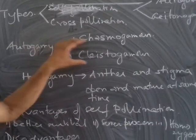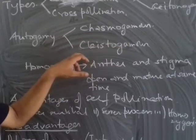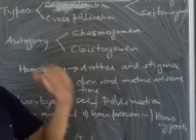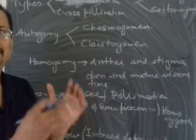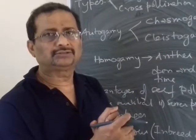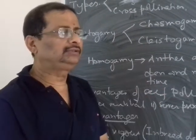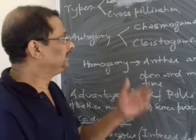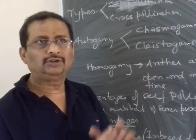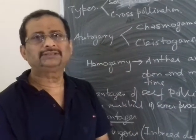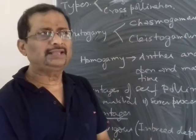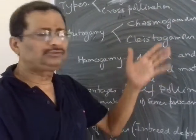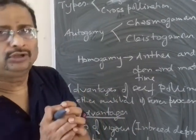In autogamy, there are two types of flowers: chasmogamous and cleistogamous. A chasmogamous flower is usually self-pollinated and opens up fully after self-pollination has occurred — we find this in Viola species. In cleistogamous flowers, the flower does not open at all, so they are definitely autogamous. Chasmogamous flowers can sometimes be cross-pollinated.